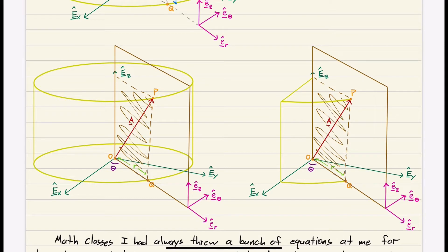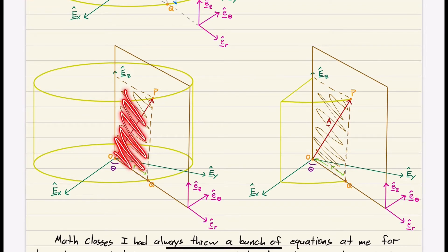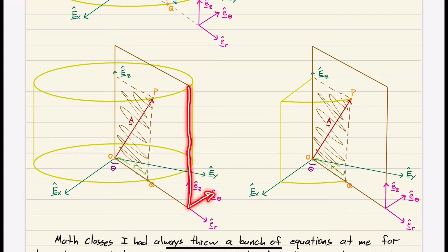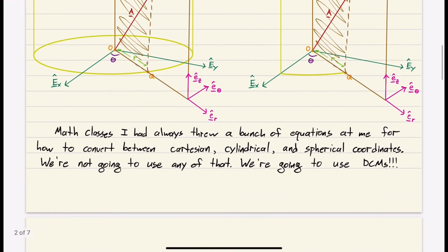I picture the cylinder as kind of like a cake, and I cut into the cake with a brown plane — that's the plane formed by OPQ. ER points from O to Q in that direction, E-theta is perpendicular to our brown plane, and E-Z points straight up. This other drawing shows just the slice — without the rest of the cake — to illustrate the sweep angle theta and how much of the cylinder has been swept.